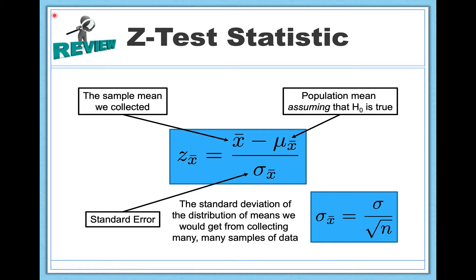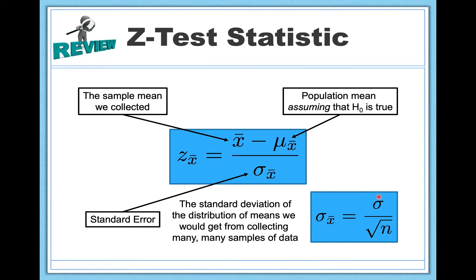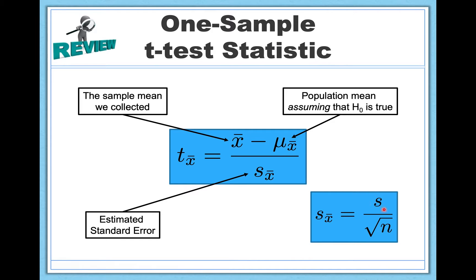We've already learned about two different hypothesis tests: the one-sample z-test and the one-sample t-test. There were a lot of similarities between these two formulas and only one or two differences — namely that in the t-test, you don't need to know the true population standard deviation; instead, you approximate that using sample standard deviation. But there are a lot of similarities in terms of calculating these test statistics and also in terms of when they're used.